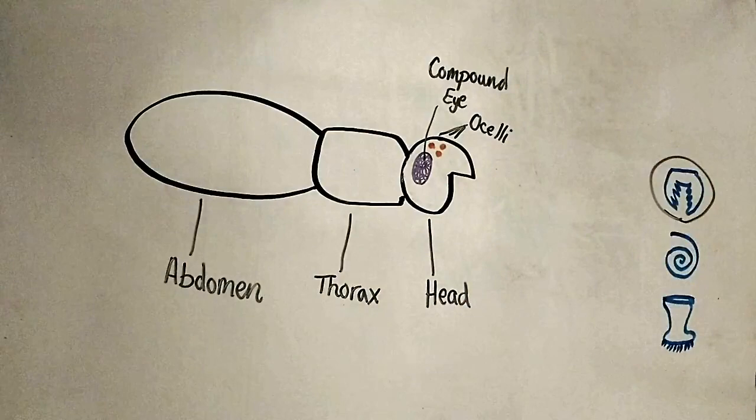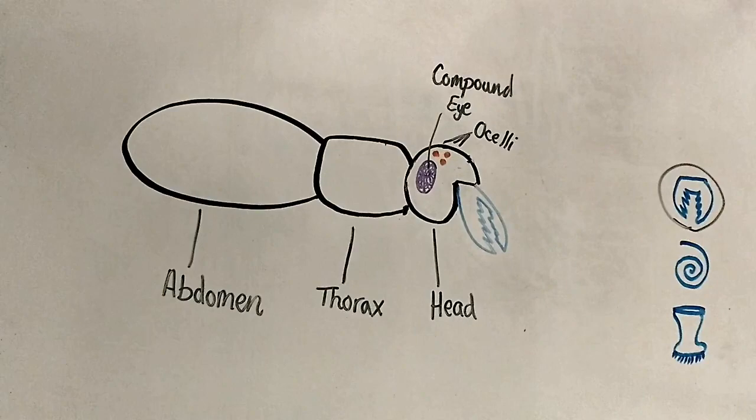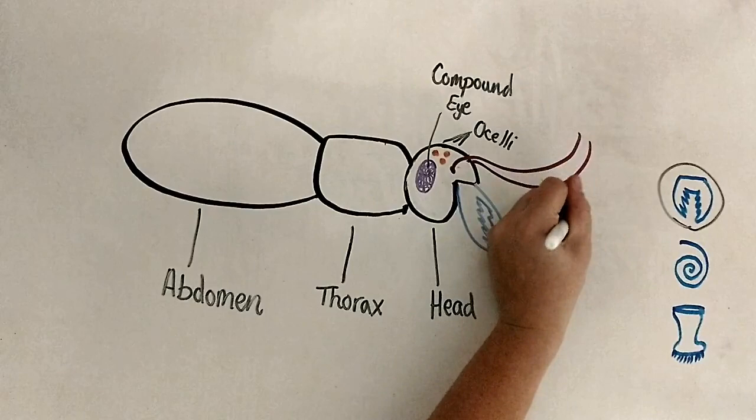Also on the head, we have antennae that insects can use for smelling, tasting, touching, and hearing the world around them. This makes antennae a very important tool for insects.